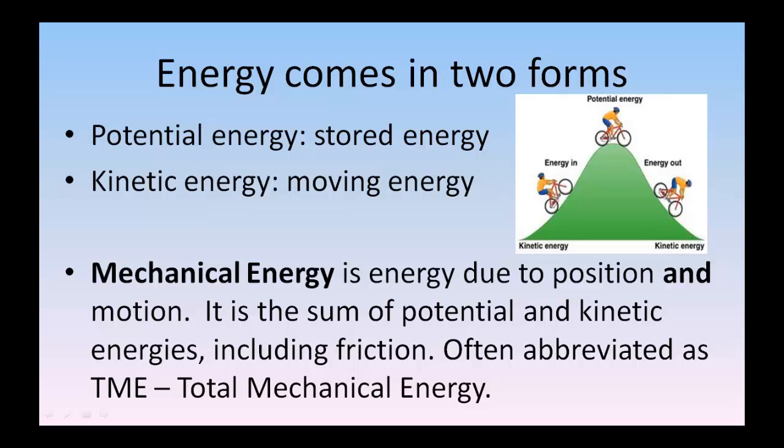When we talk about the total energy in the system, what we're talking about is mechanical energy. That's just the word they give. Mechanical energy is when they're talking about potential energy plus kinetic energy. That would be in comparison to chemical energy. So mechanical energy is when you're talking about the two forms of energy we're most likely to use, potential and kinetic energy. And then you put them together, and you call it mechanical energy. And it's due to position. When we talk about mechanical energy, we talk about position and motion, just like this bicyclist going up and down the hill. So mechanical energy is the sum of potential and kinetic energies, including frictions. It's often abbreviated as total mechanical energy, TME.